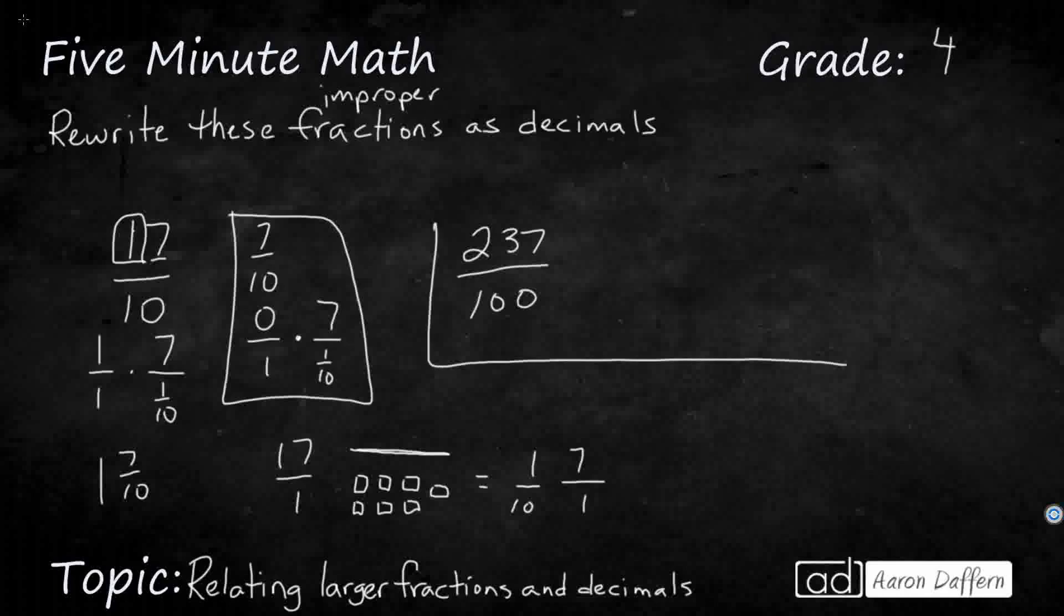So let's look at this one right here. 237 hundredths. Well, we need to write a decimal that goes to the hundredths. We at least need something in the ones place, even if it's a zero. We're going to need our tenths, because even if nothing's there, we need that place, because we've got to go all the way over to our hundredths. That's my hundredths place right there. And then what we do is we write this one digit at a time, with the last digit going in the place that's named. So the 7 is in the hundredths place, which means that 3 is going to go in the tenths place, which means I actually have space left over for a 2 in the ones place. So 237 hundredths is the same as 2 and 37 hundredths.